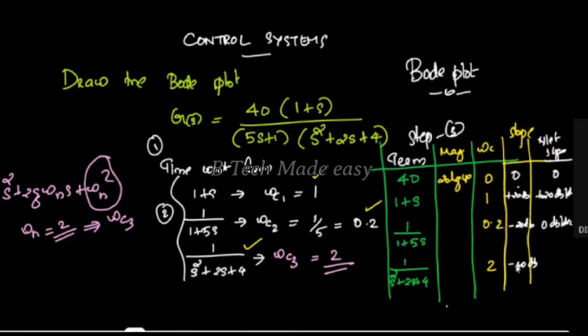Next, we will proceed with −40 dB/decade slope for the second order denominator term. We will plot the overall slope. This is a similar procedure.